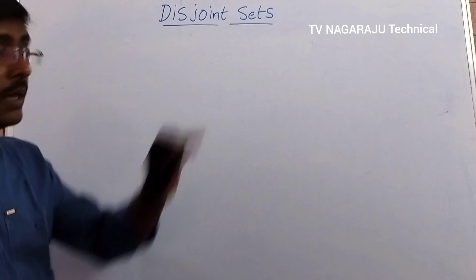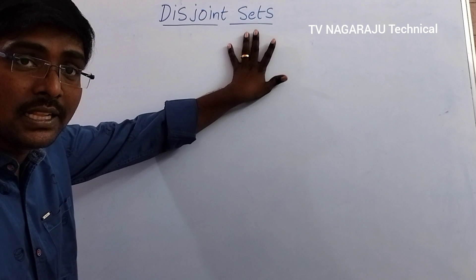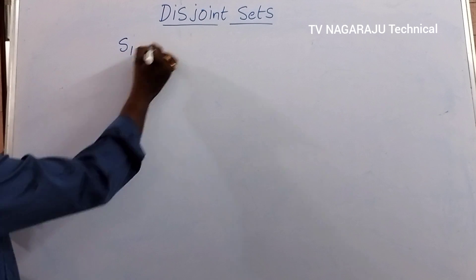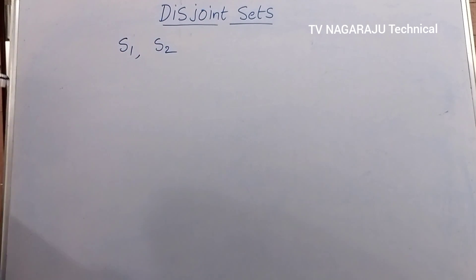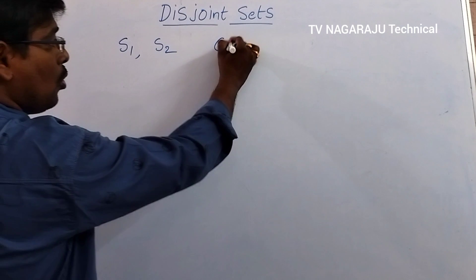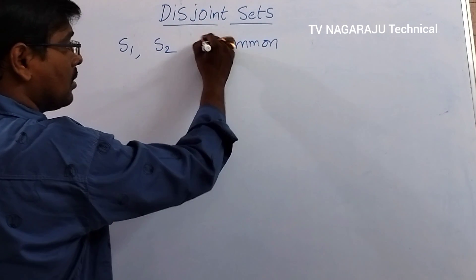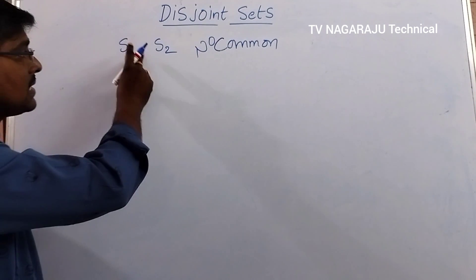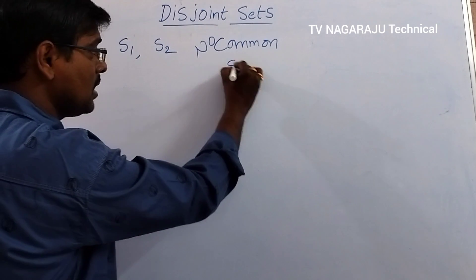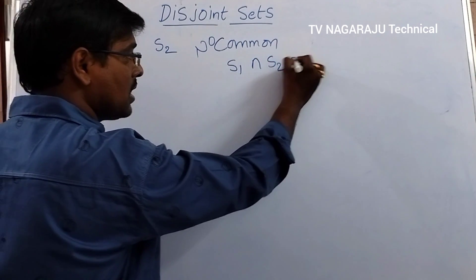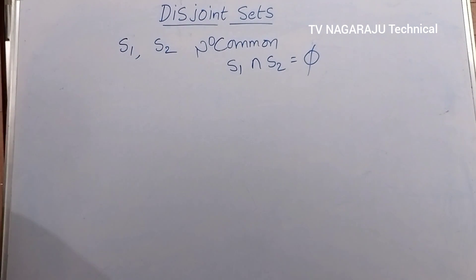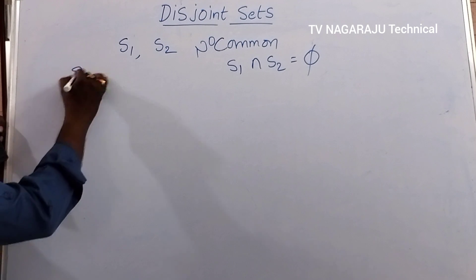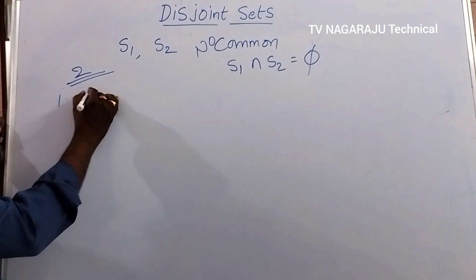Hi friends, welcome to our channel. In this session we will discuss disjoint sets. Consider any two sets S1 and S2 such that there is no common element between the two sets — then the sets are called disjoint sets. That means simply S1 intersection S2 is equal to empty set. Such sets are called disjoint sets.